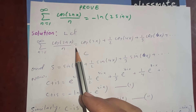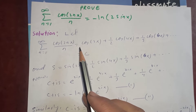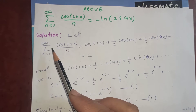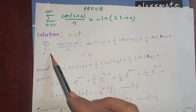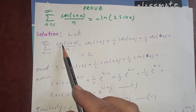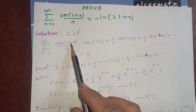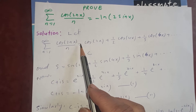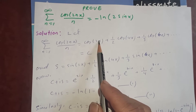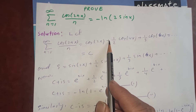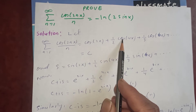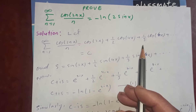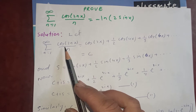Now I'm going to use the C plus iS method of summation. Let our summation C be the sum from n=1 to infinity of cos(2nx)/n. If you plug in the terms: cos(2x) plus one-half cos(4x) plus one-third cos(6x) plus and so on.